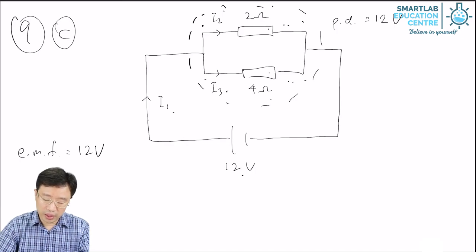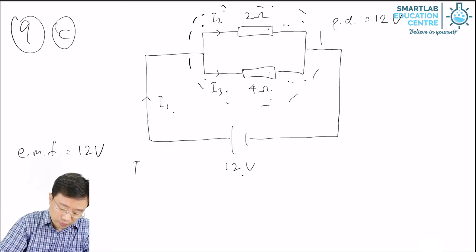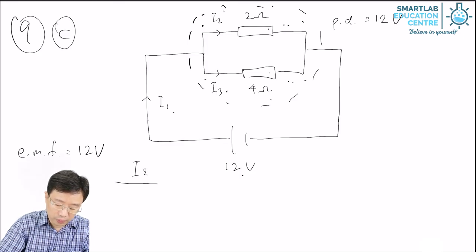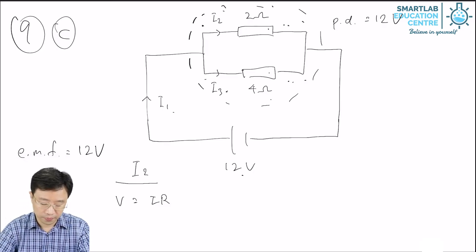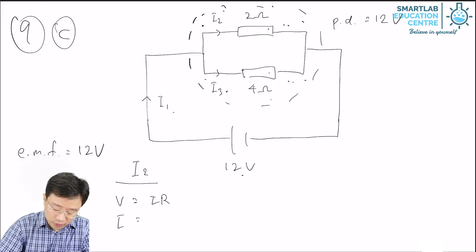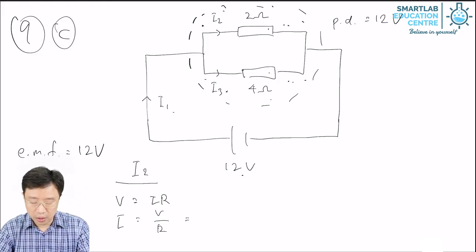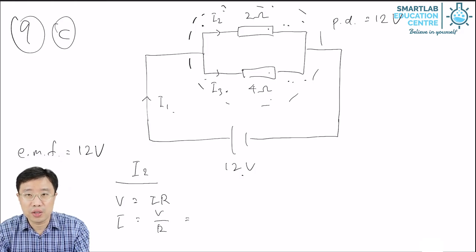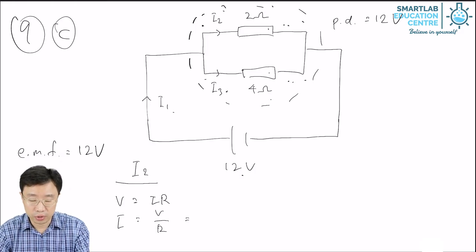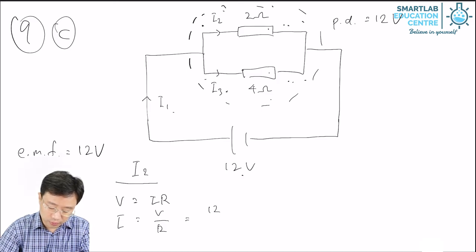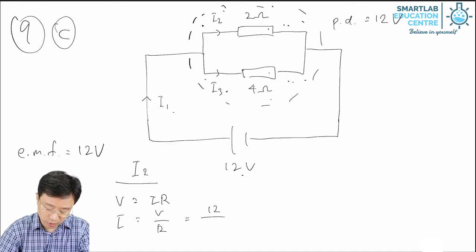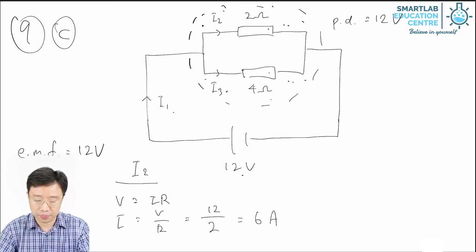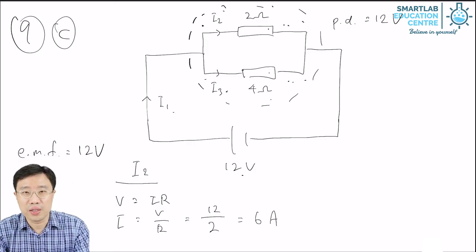To calculate I2, we apply the formula V = IR to the 2-ohm resistor, giving I = V over R. The PD across the 2-ohm resistor is 12 volts, and its resistance is 2 ohms, so I2 equals 6 ampere.